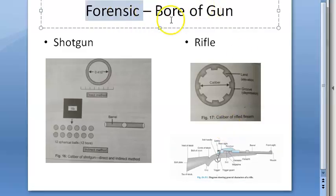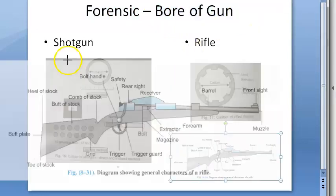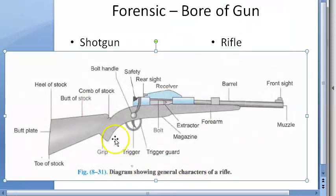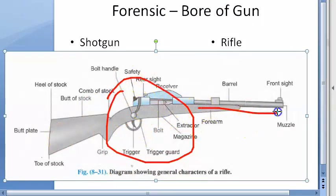Guys, this topic in forensics, bore of gun, is important. So what exactly is bore of gun? You know this is a gun, correct? This is actually a rifle. This is the chamber, and in front of it you have this barrel. Now this barrel, inside the circle, whatever you see, this diameter, this hole, that is the bore.